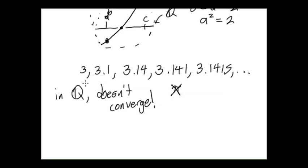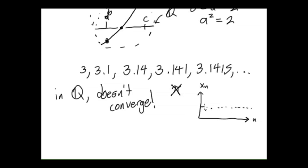We haven't formally defined the convergence of a sequence yet, but you should still have some intuitive problems with Q at this point. We have a sequence of numbers that we know should theoretically get close to something. If we graphed the sequence — kind of an n versus x_n plot — you would get something that eventually just kind of levels out near some number, really, really close to it. But if this is Q again, zooming in here, we get another gap. There's our x-axis, and we've got a gap. So this limit doesn't exist.